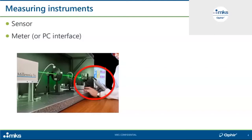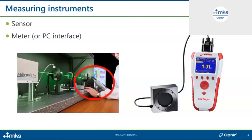We're going to look mainly at the sensor, since the differences among sensors are physical and technical. But we will also spend some time talking about choosing a meter. Here you see a typical sensor and meter combination. Different manufacturers use different words — Ophir used to call them heads and displays, then changed to sensors and meters. Others call the meter a console or controller.